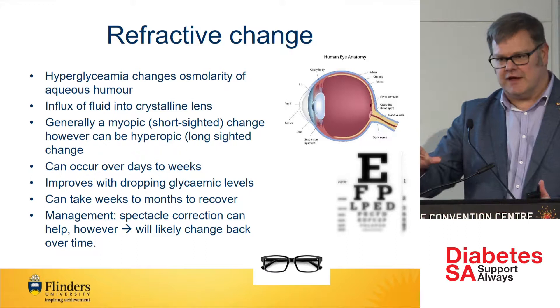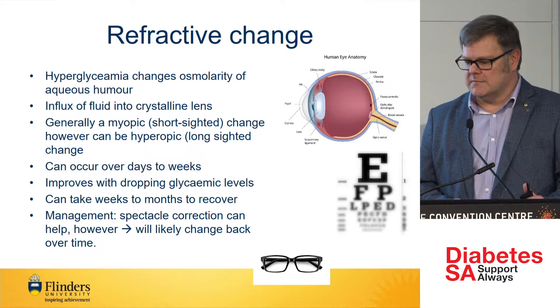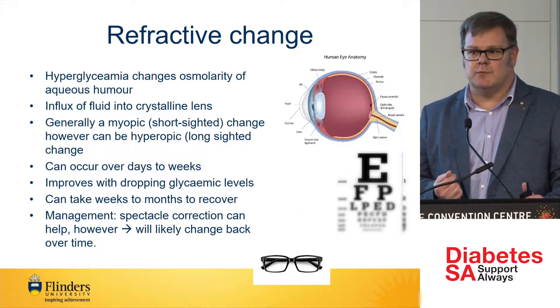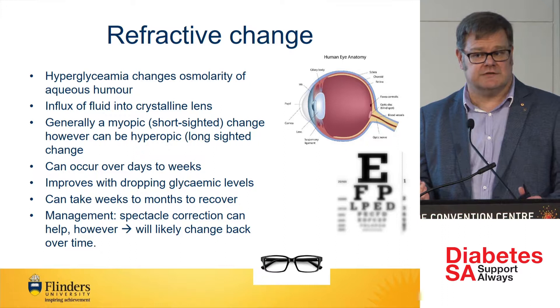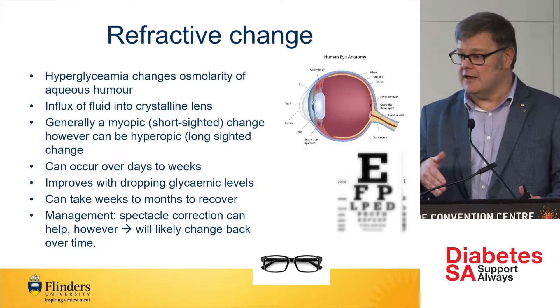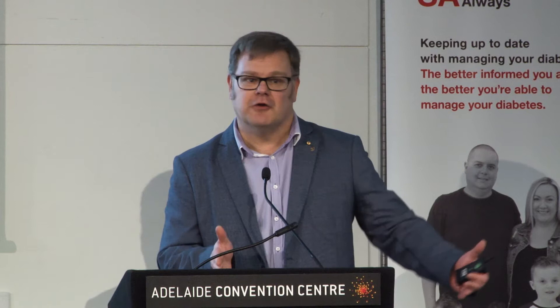Normally, people find they go more short-sighted — they can't see in the distance, but reading's easier. But if a person's been diabetic for a long period of time and their blood sugar levels have been consistently high and then they get on control, it can go back the other way. It can change through the course of the day or through the course of a week. If you see an optometrist and report that your blood sugar control hasn't been great recently, quite often we'll suggest we don't sell you glasses today — we get you back in to check for fluctuation, because the numbers on one day may no longer be correct by the time the glasses get to you a week later.